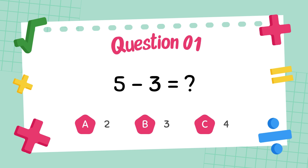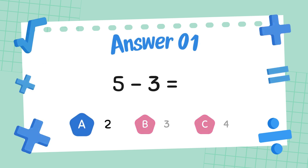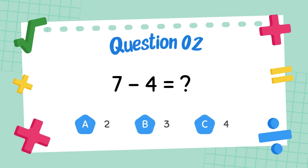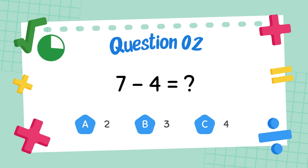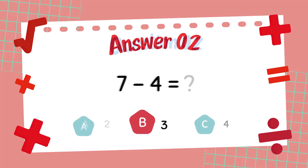What is 5 minus 3? The answer is 2. What is 7 minus 4? The answer is 3.